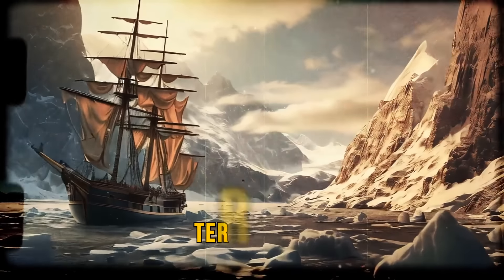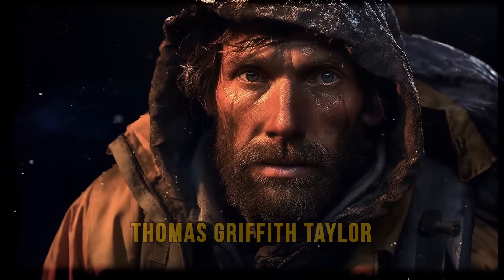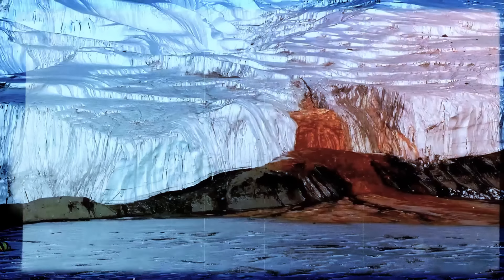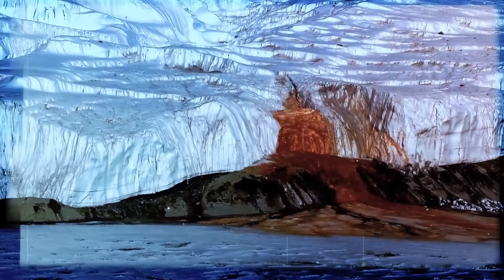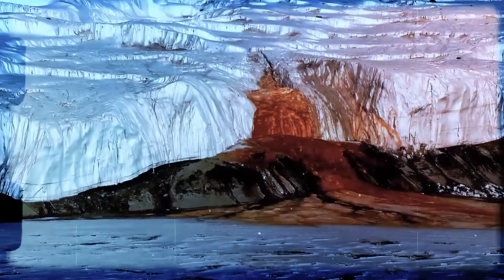A member of Scott's expedition known as Terra Nova, British geologist Thomas Griffith Taylor, not only survived the harsh conditions, but also made an unexpected discovery. He found a waterfall of what appeared to be blood at the rocky base of the glacier, which now has his name, in 1911. It took scientists more than a century to figure out what is behind the eerie coloring.